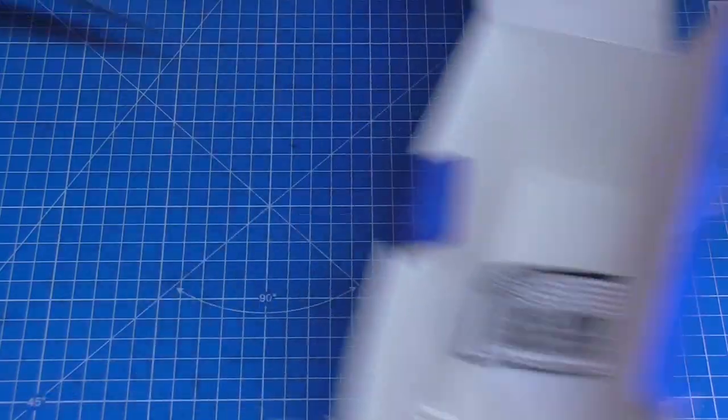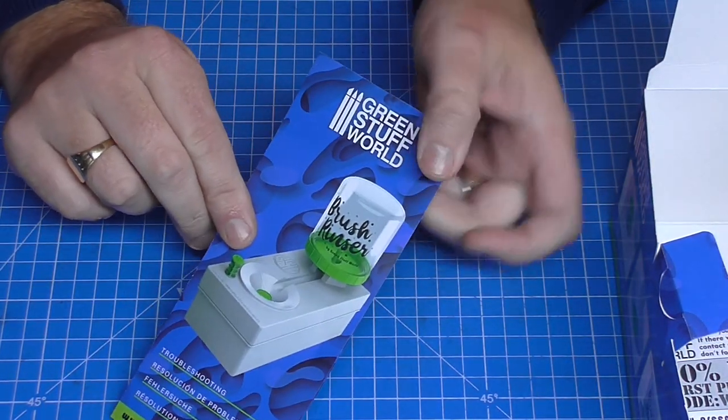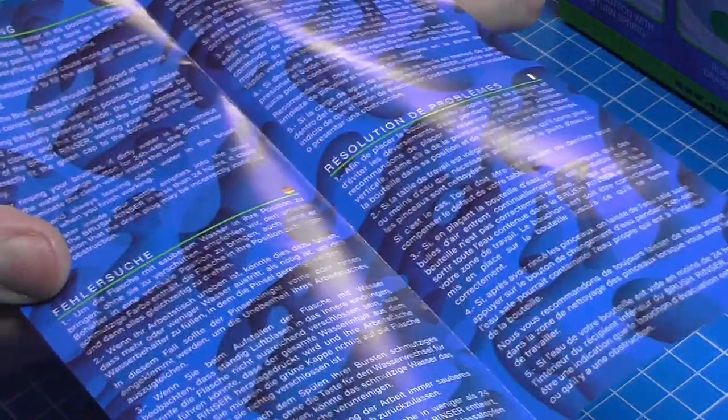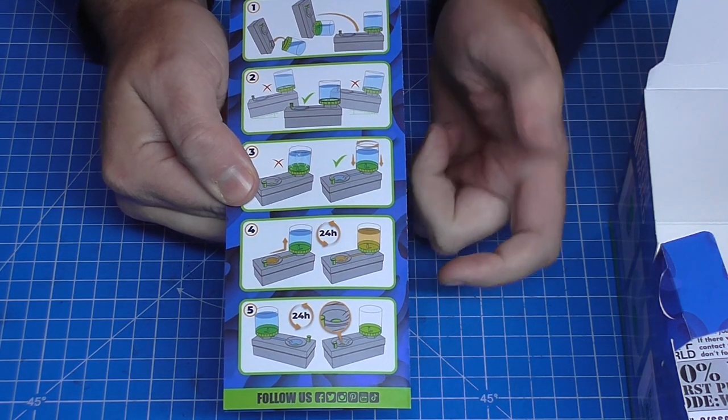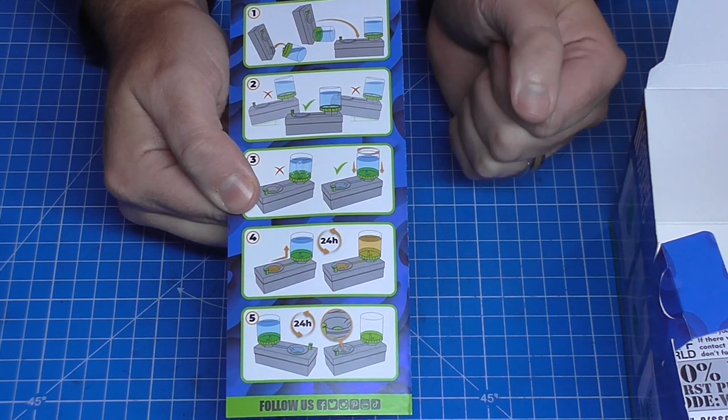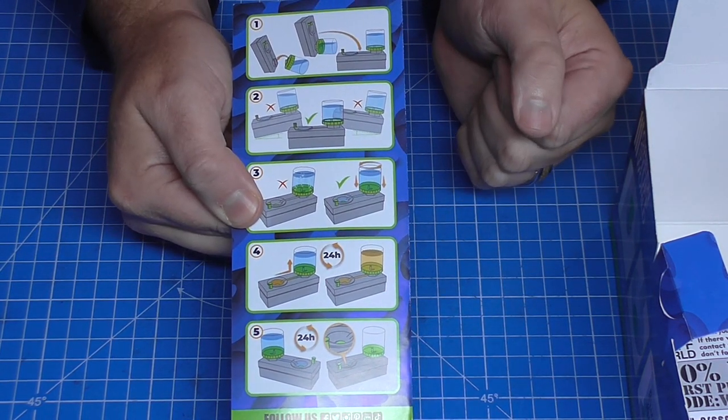Now the instructions leave a lot to be desired. This is what it's going to look like when it's done, but it doesn't really tell you how to put the thing together, it just tells you how to put the reservoir on top and that's it. So I had to figure that out for myself. So let me show you how this is built.